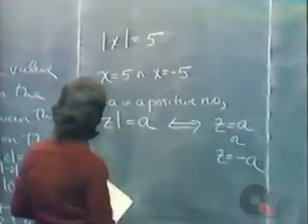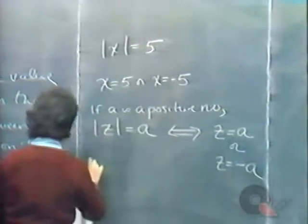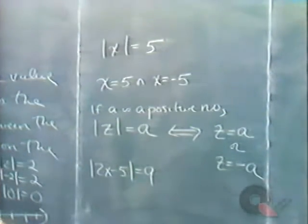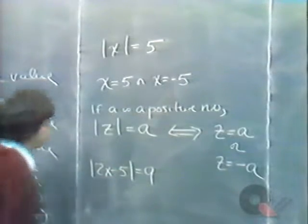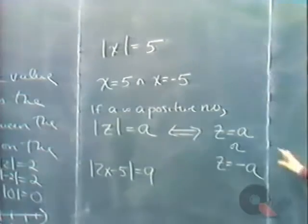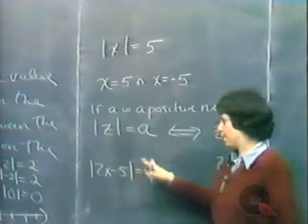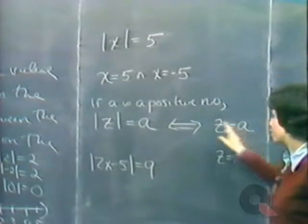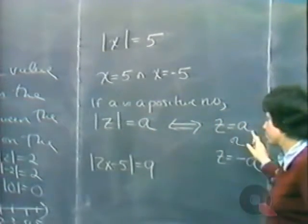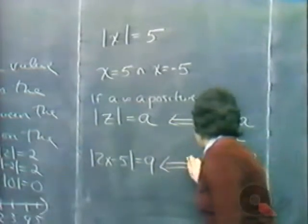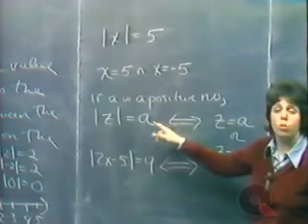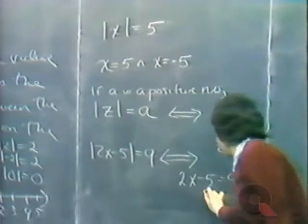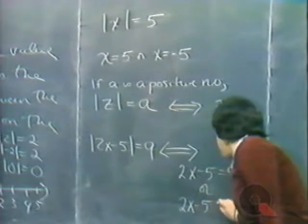Let's try to solve a more complicated absolute value equation: the absolute value of 2X minus 5 equals 9. This matches the form absolute value of Z equals A, which can be replaced by two equations without absolute value: 2X minus 5 equals 9, or 2X minus 5 equals minus 9.